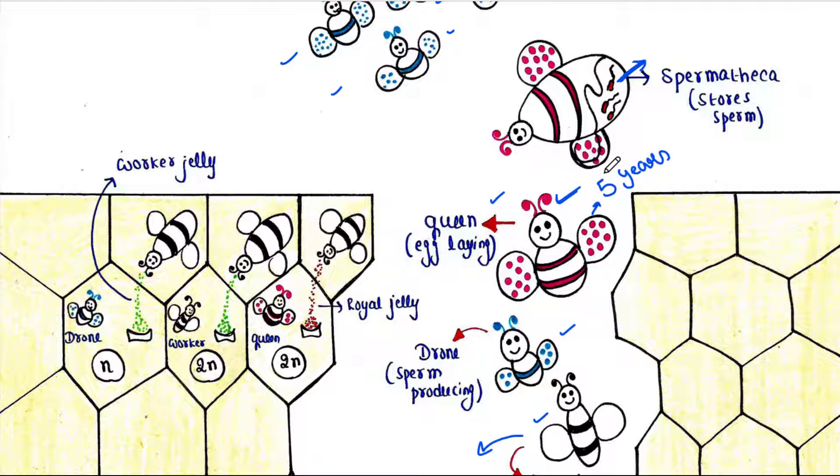Queens can decide whether to lay haploid (unfertilized) or diploid (fertilized) eggs. That is a peculiar characteristic of honeybee. In honeybees, sex is determined by their fertilization event, not by sex chromosomes.